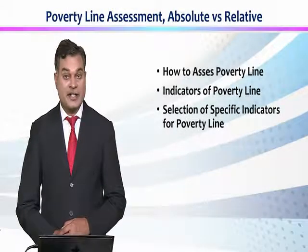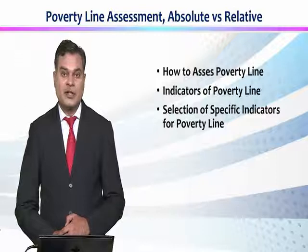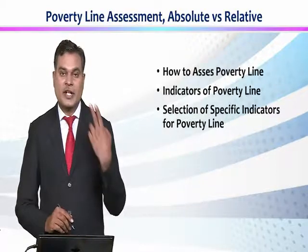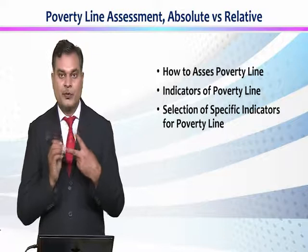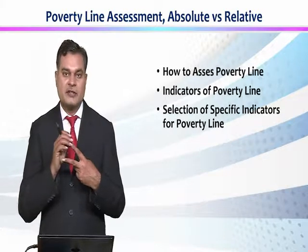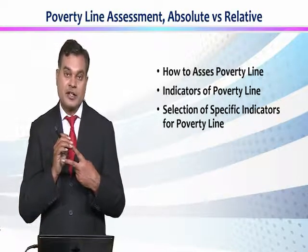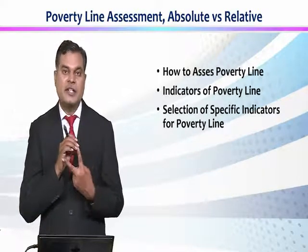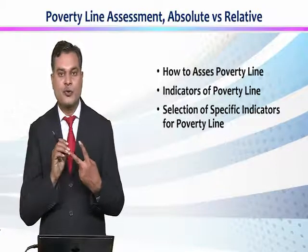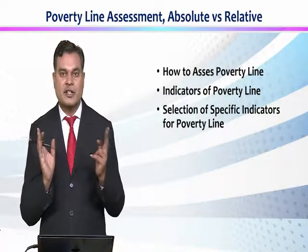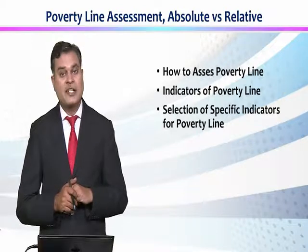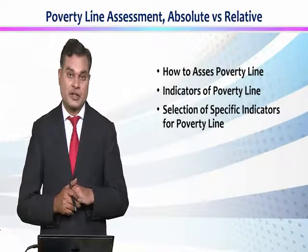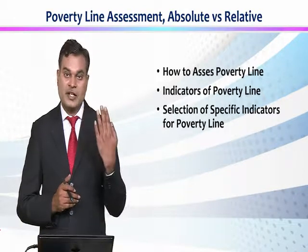We are moving toward poverty line assessment. For poverty line assessment we use two criteria: assessment of absolute poverty line and assessment of relative poverty line. किस तरह हम poverty line को relative और absolute को differ करते हैं, और उसको assess करने के लिए हम indicators of poverty line use करेंगे।